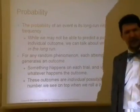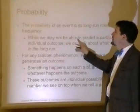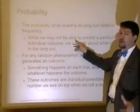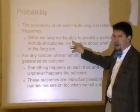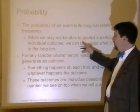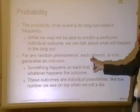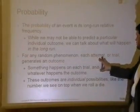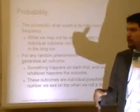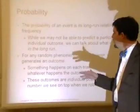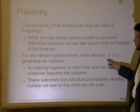Relative frequency is the percentage of the whole — it's based off the known opportunity. Your probability is based on that in the long term; it's the theoretical probability. For any random phenomenon, each attempt or trial generates an outcome, like a response variable.